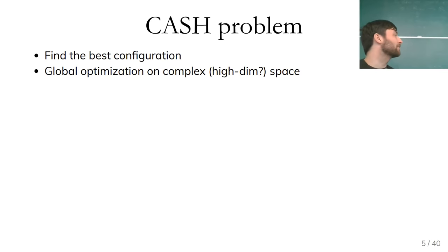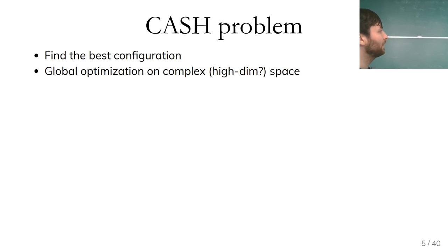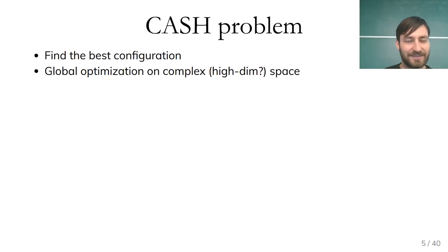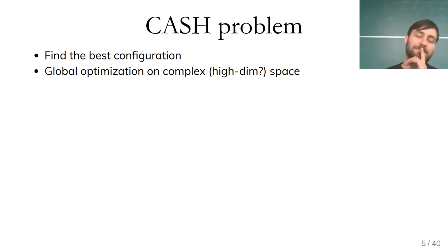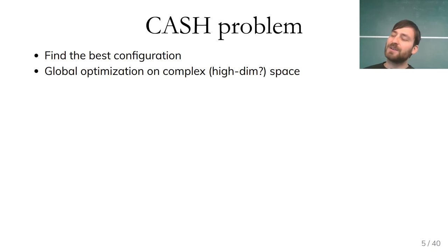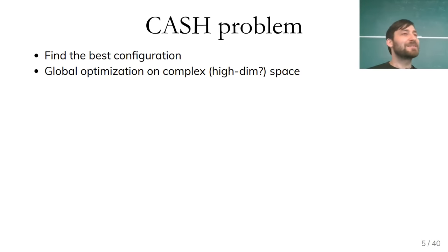This is generally called the CASH problem — Combined Algorithm Selection and Hyperparameter optimization — the problem of searching both over the pipeline and over the hyperparameter space. So far the only thing we've basically looked at for this is grid search. Whenever we wanted to tune a hyperparameter, we used grid search, which is essentially exhaustive or brute-force search — it looks at all possible combinations, or all valid configurations if you have conditional parameters.